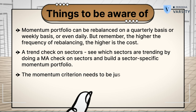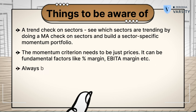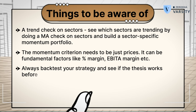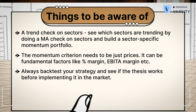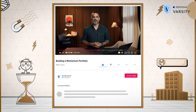Your momentum criterion need not be just prices — it can be fundamental factors like profit margin, EBITDA margin, or growth in quarterly numbers, although I'm not a big fan of this. And finally, always backtest your strategy. Check if the momentum thesis has worked well in the past, and only then implement this in real markets. Good luck, and do let me know what you think about the momentum strategy by commenting below.